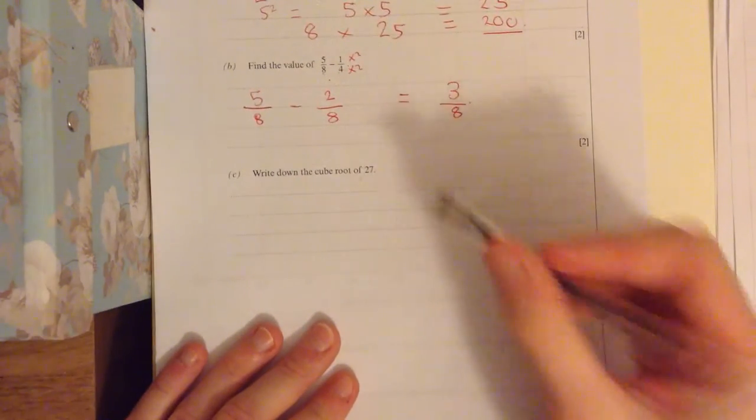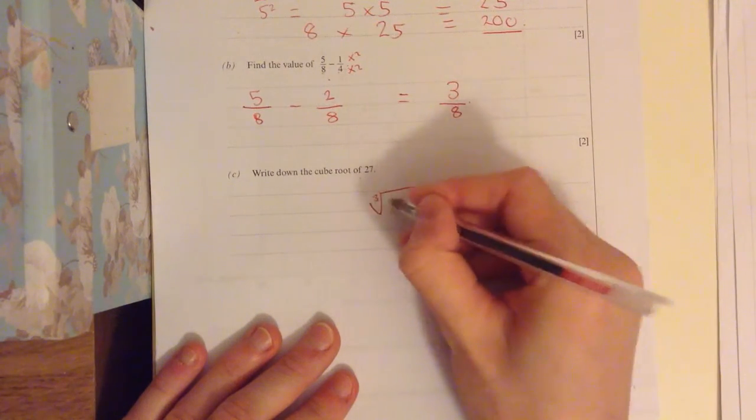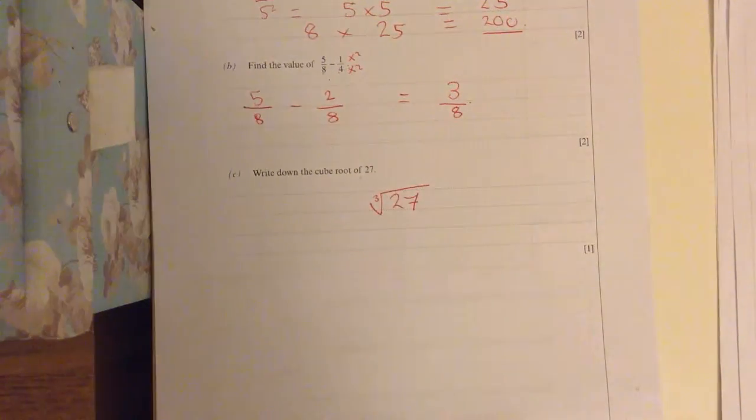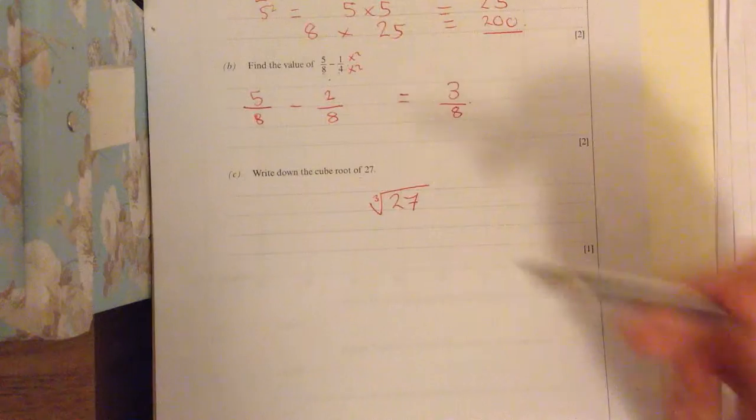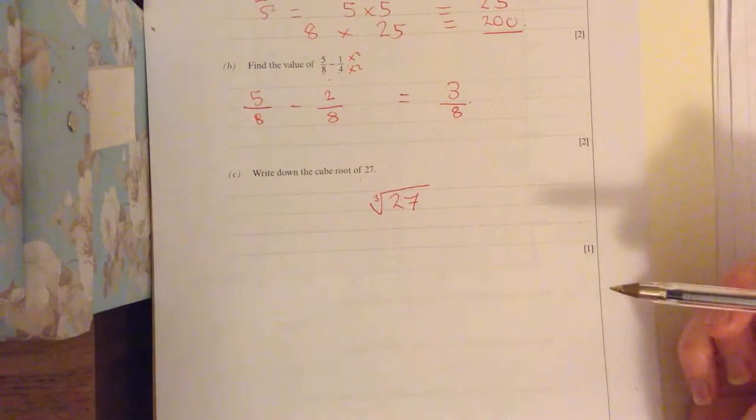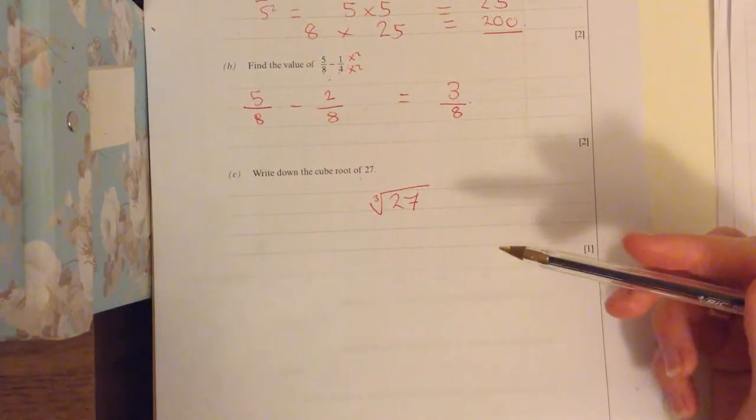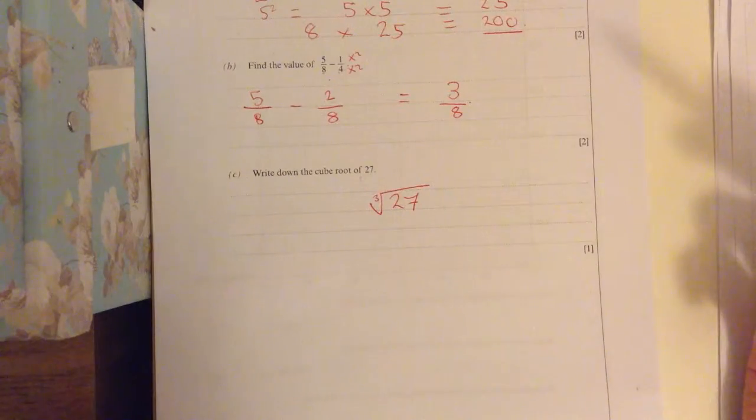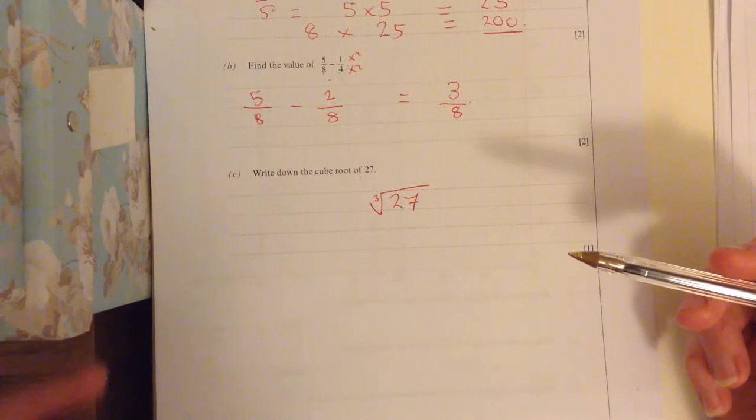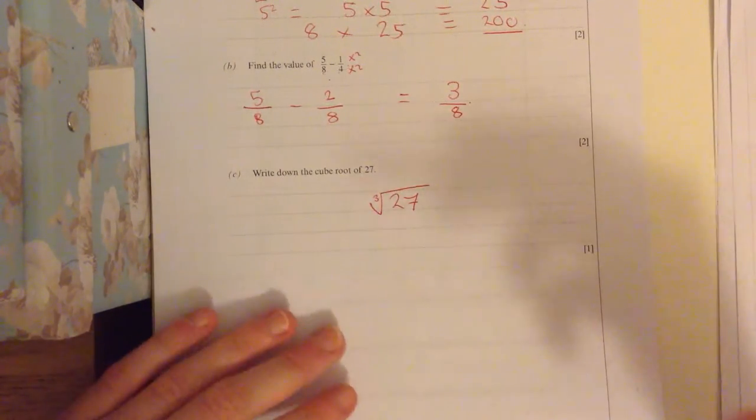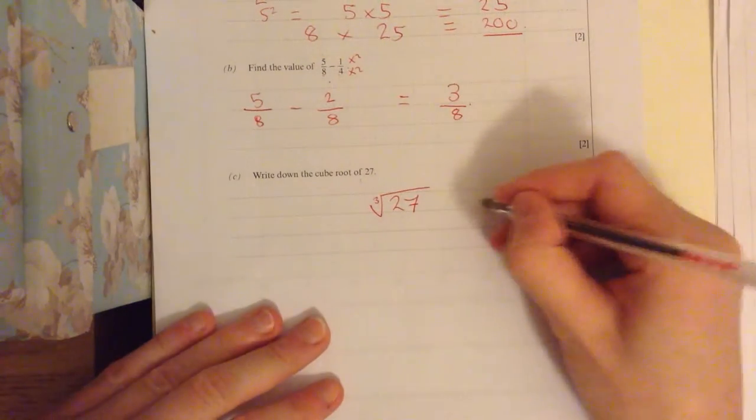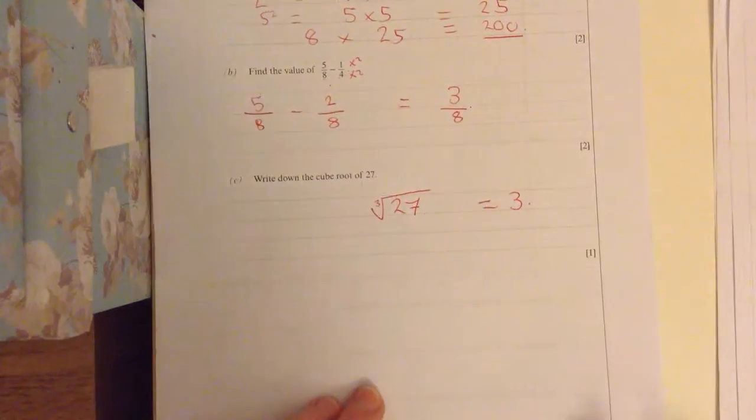Cube root of twenty-seven. That means the cube root of twenty-seven. What times is it by itself three times to make twenty-seven? We find this tricky, work your way up with numbers. So one times one times one is one. It's not that. Two times two times two is eight. It's not that. Three times three times three is twenty-seven. So the answer is going to be three.